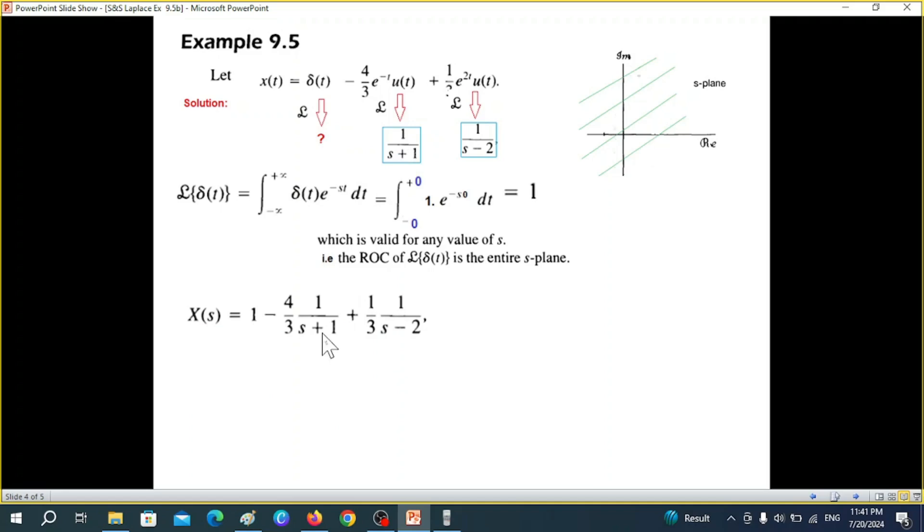This one became one. This is one over s plus one multiply is four over three. And similarly this is one over three and one over s minus two. So this is the net value.